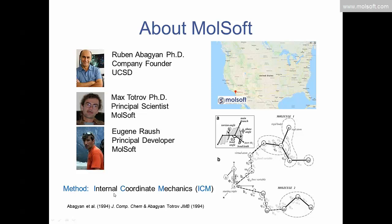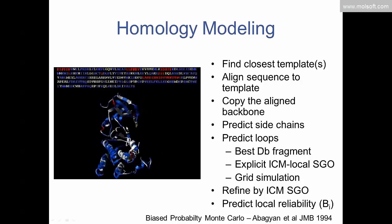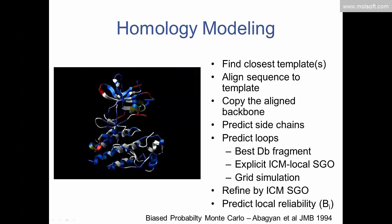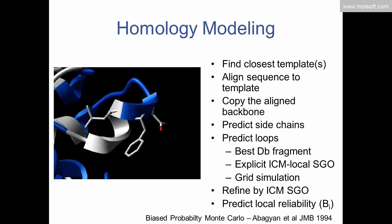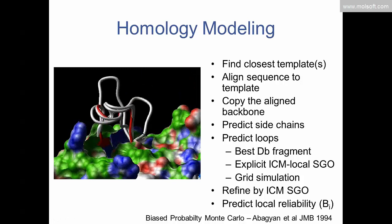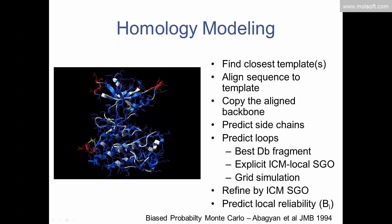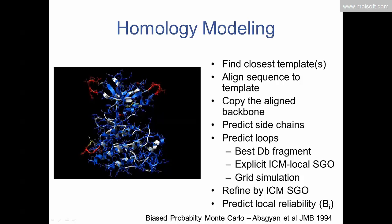ICM stands for Internal Coordinate Mechanics — we use internal coordinates rather than Cartesian coordinates. You can read more in these papers. In homology modeling, you take your query sequence, go to the PDB, and find a template with good sequence identity from which to build your model. Once you find that template, you thread your query sequence onto the structure, predict loop conformations and side chains, and fully optimize the structure in our force field using the Biased Probability Monte Carlo method, published in 1994 by Abagyan, Totrov, and Kuznetsov.